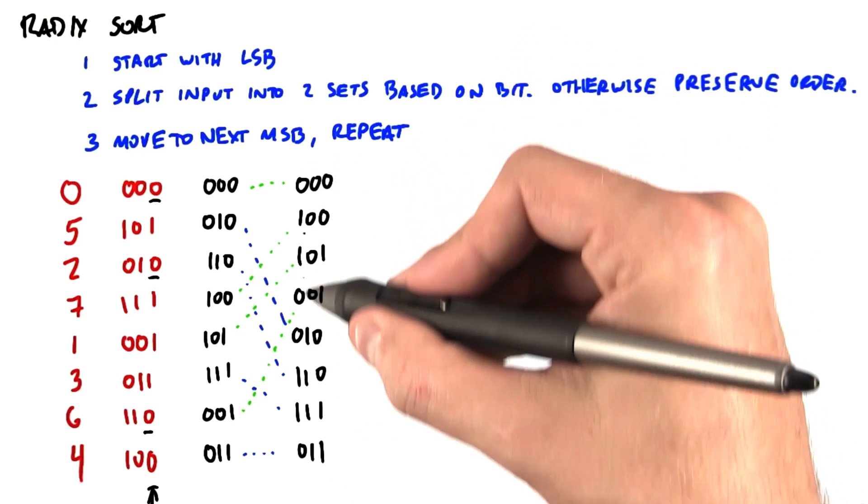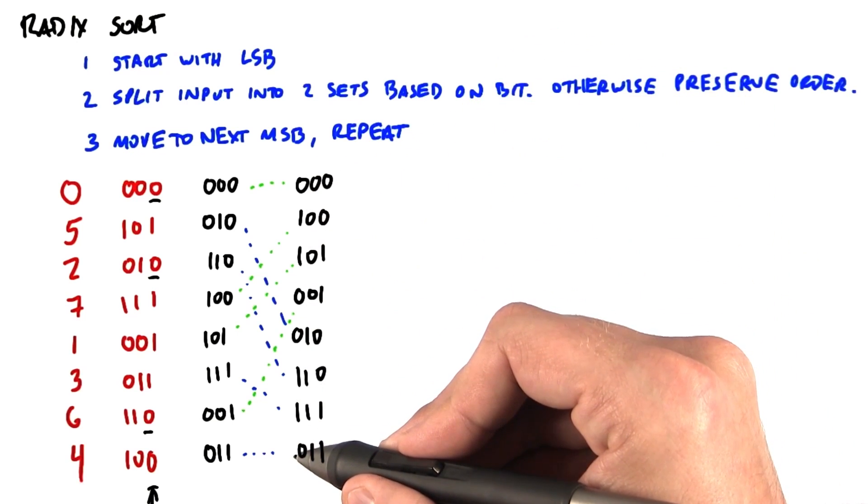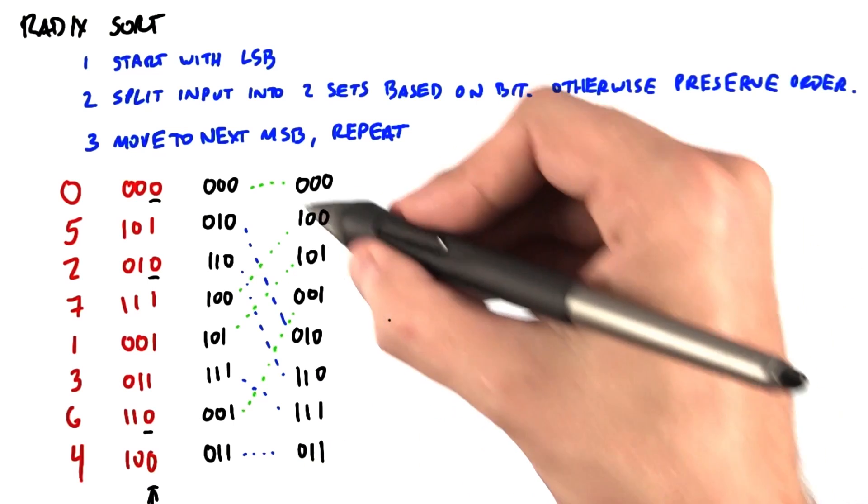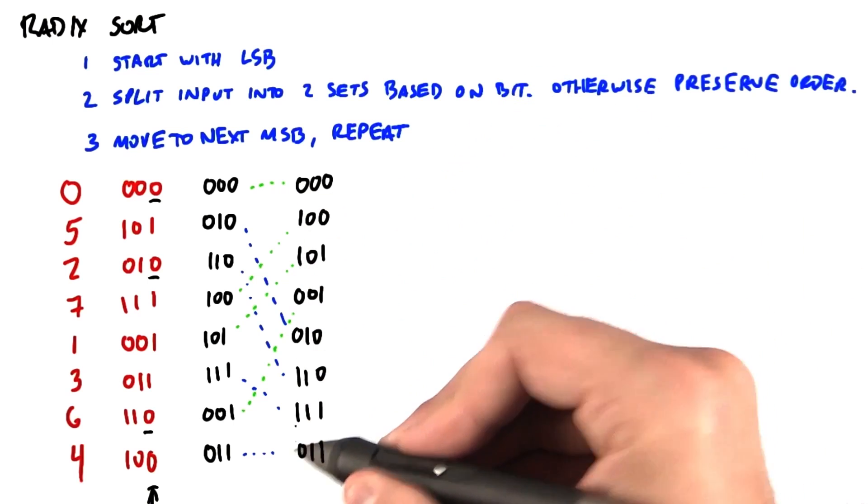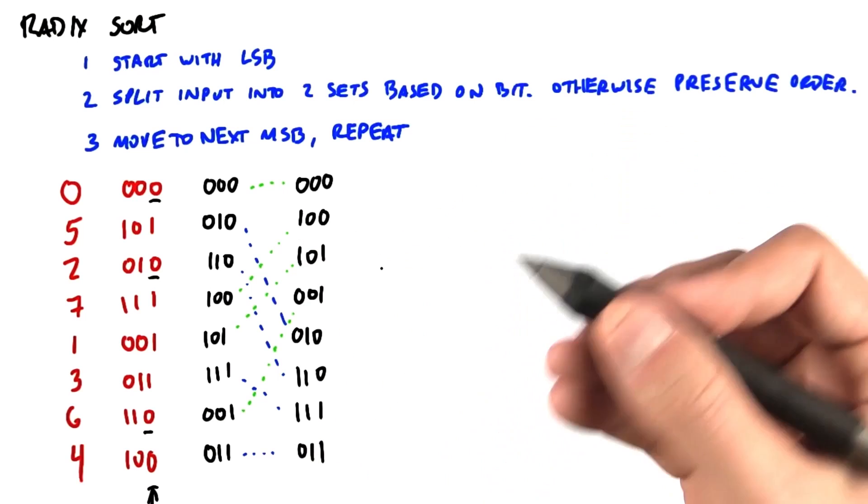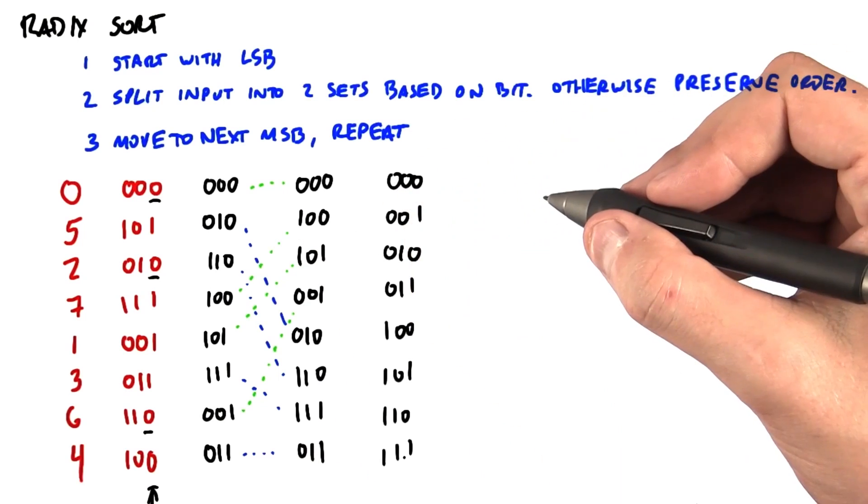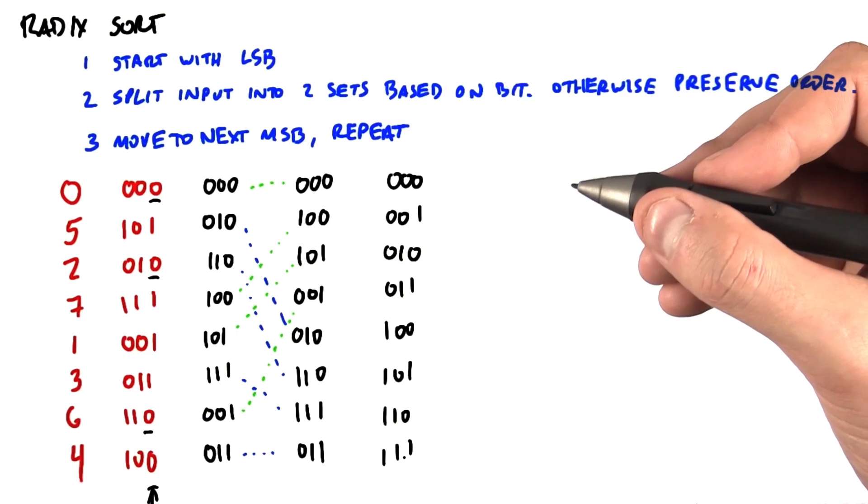Now we move on to the next most significant bit, in this case the very most significant bit, and we do the same operation again. Zeros in the most significant bit move up top, ones move to the bottom, otherwise we maintain the order. And now we have a sorted sequence. Pretty cool, huh?